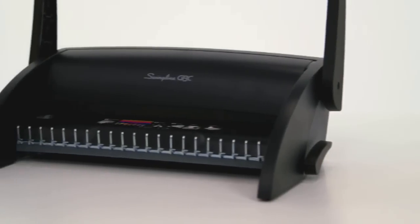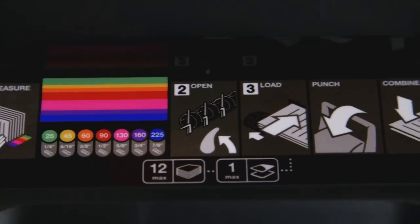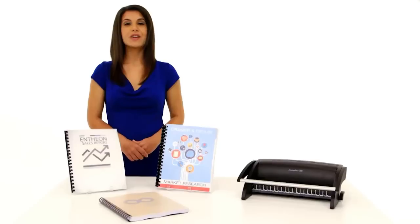Achieve perfect results every time due to the unique step-by-step workflow guide that leads users through the punching and binding process using color coding and images to eliminate mistakes. This guide quickly checks document thickness and selects the correct comb size for the number of pages you are binding.